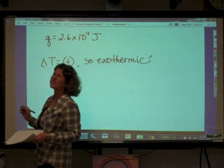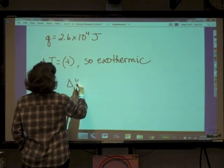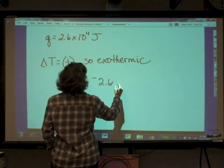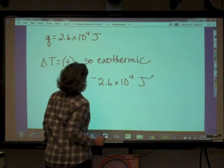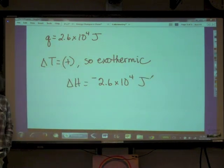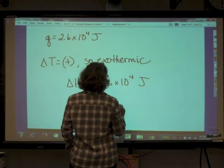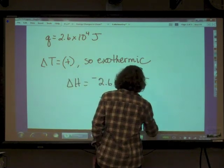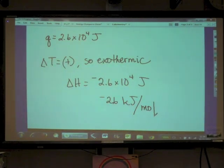What is the sign of delta H? The sign is negative. So delta H equals negative 2.6 times 10 to the fourth joules, or negative 26 kilojoules per mole of barium sulfate formed.